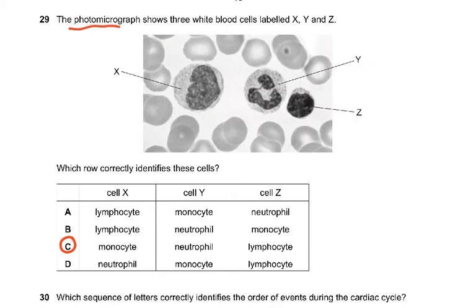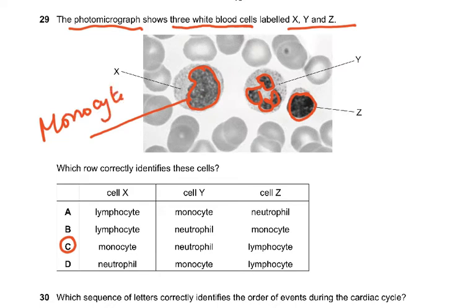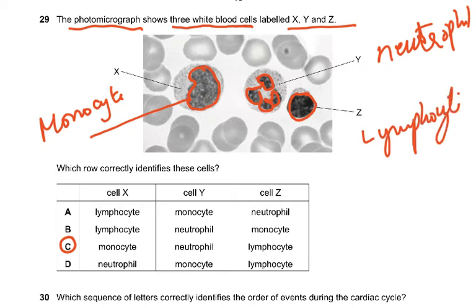Question 29: The photomicrograph shows 3 white blood cells X, Y and Z. X has got this kidney shaped nucleus, this has got this lobed shaped nucleus, and Z is the nucleus that really fills all the cytoplasm. This kidney shaped thing is the monocyte, the lobed thing is called the neutrophil or a phagocyte, and Z is a lymphocyte. So the answer to that was C.